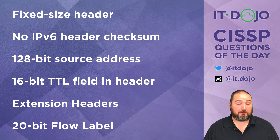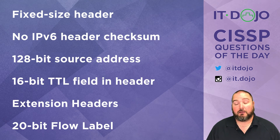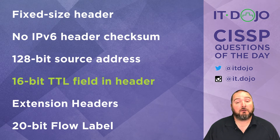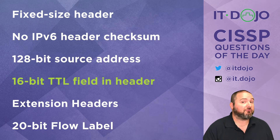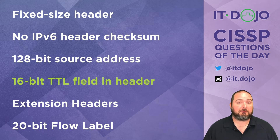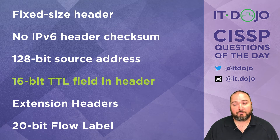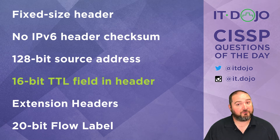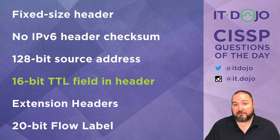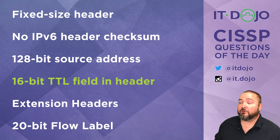How about a 16-bit time-to-live header in an IPv6 header? No — a couple of things are wrong here. First, there's no time-to-live field in IPv6; it is now called hop limit. Second, the hop limit field is an 8-bit field, not a 16-bit field — same as the TTL in IPv4. So this is the correct answer we're looking for, since we were asked what is NOT a characteristic of IPv6.